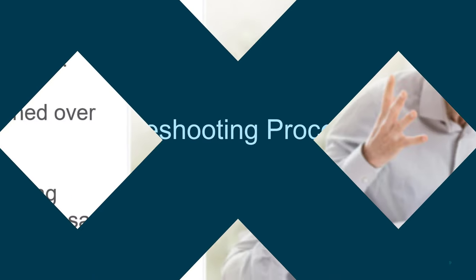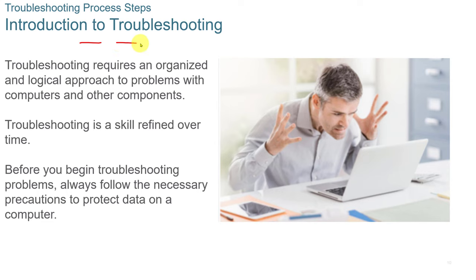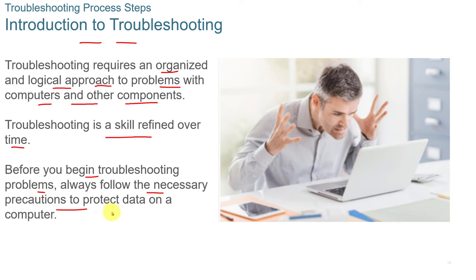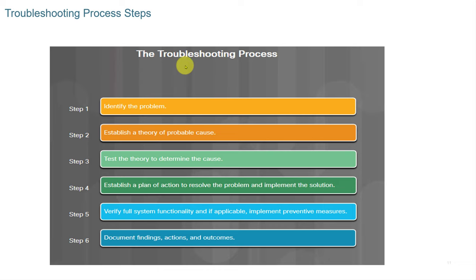Troubleshooting is a highly valuable skill — someone with good troubleshooting skills is a real asset. It requires an organized and logical approach to problems with computers and other components, and it is a skill refined over time. Before you begin troubleshooting, always follow the necessary precautions to protect data on a computer and make sure proper backups are in place. There are six steps to the troubleshooting process that you'll need to know for this course exam and for the CompTIA A+ exam.